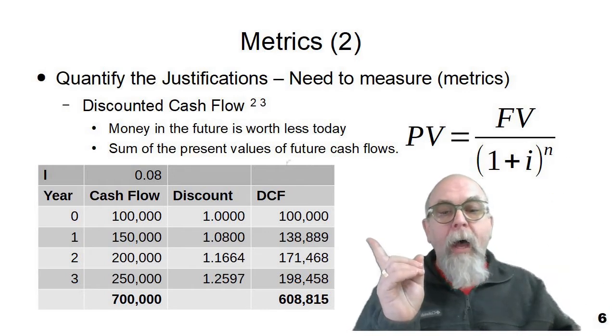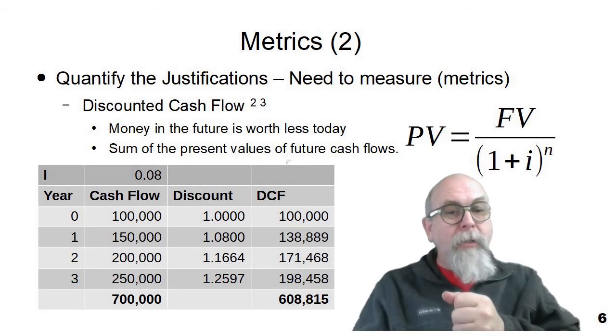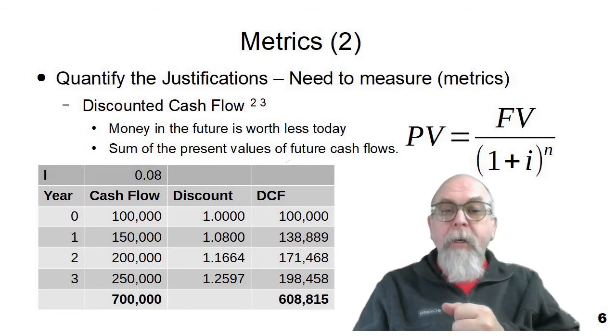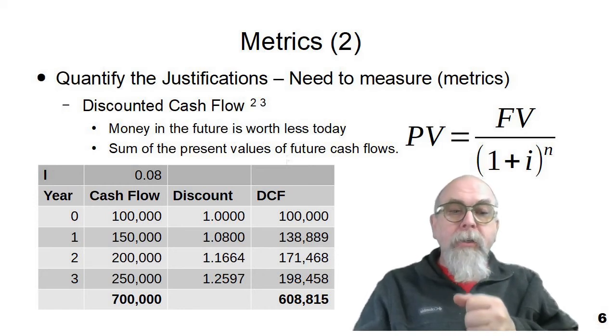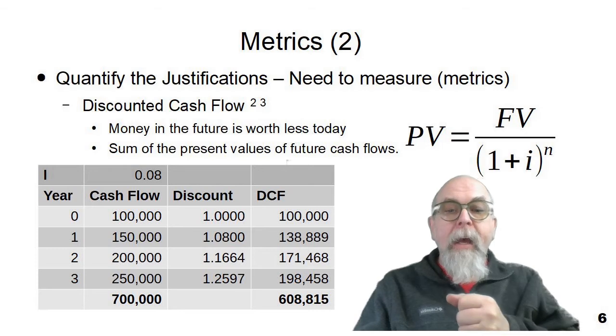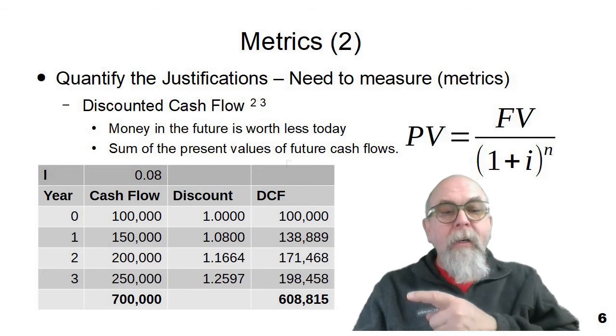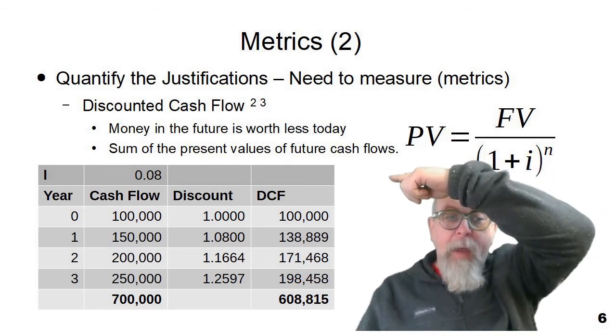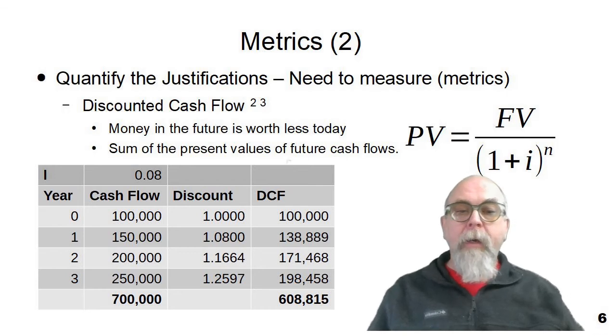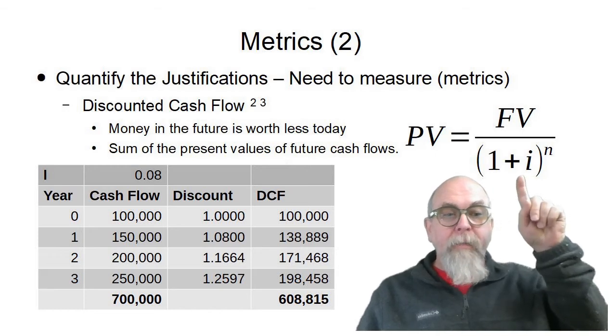Here is an example. We need in year zero, which is today, right now, year zero, we need $100,000 to do this project. We need $150,000 in a year, we need $200,000 in two years from today, and we need $250,000 in three years from today. So that would be a total of $700,000 that we need in cash flows to perform this project. Now, I'm using an interest rate of 8%, you can see there on the top of the table, and I calculate the discount.